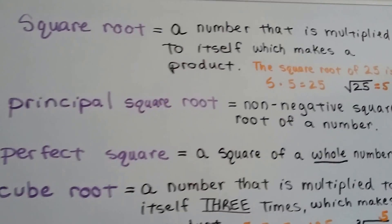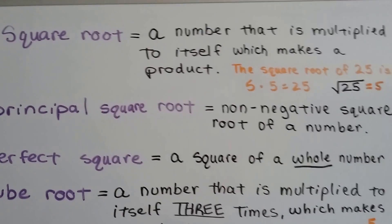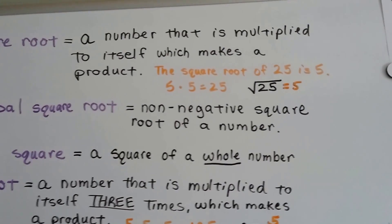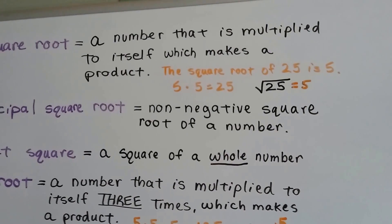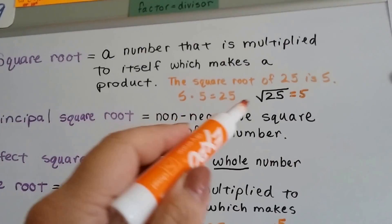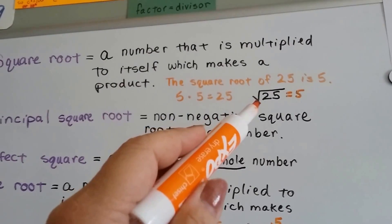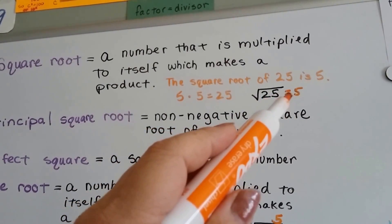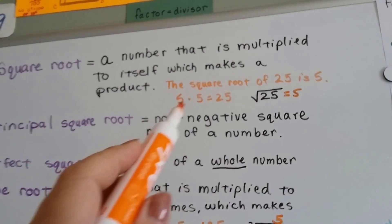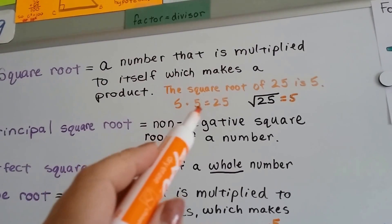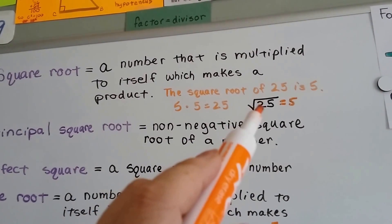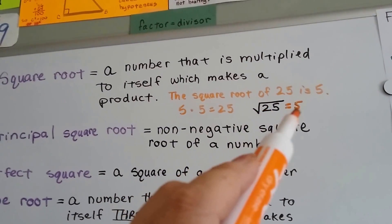A square root is a number that is multiplied to itself which makes a product. The square root of 25 would be 5, because 5 times 5 is 25. It would be written inside of a symbol like this: √25, and it would equal 5. It's a number that's multiplied to itself and it equals that number. The square root of 25 is 5.